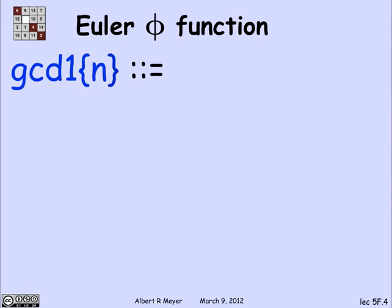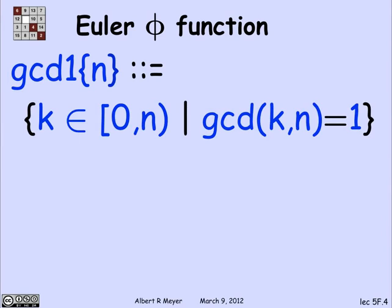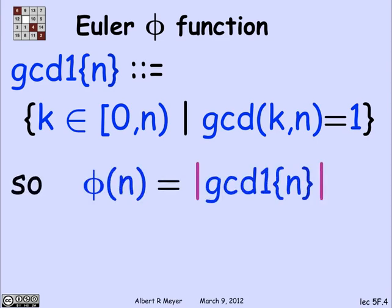Another way to say relatively prime to n is to say the GCD of k and n is 1. So let's define that set of numbers that we're interested in. Let GCD1 of n be those numbers that have a GCD of 1 with n. That is the numbers that have inverses and the numbers that are cancelable modulo n. So phi of n is precisely equal to the size of GCD1 of n.